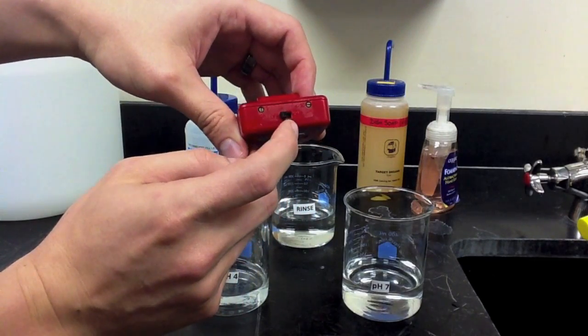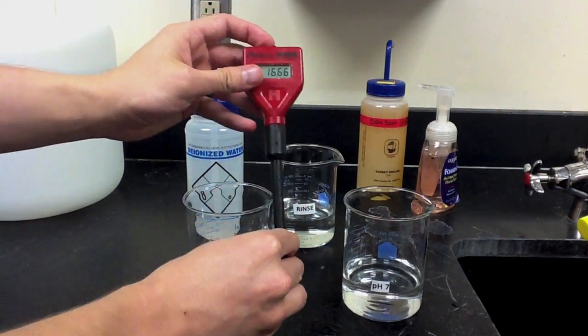We'll start by turning the pH meter on and then removing the cap from the bottom of the electrode.